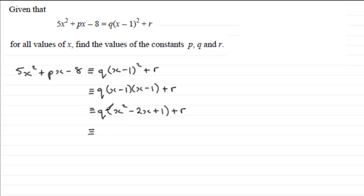Now if I expand the bracket out here with the q, I'm going to get qx², then -2qx, then +q, and then we get +r.